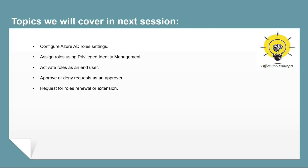In the next video, we will set up and configure Privileged Identity Management. I will demonstrate practically how to configure settings for Azure AD roles, how to assign roles to end users, how end users can activate the roles, how an approver can approve or reject a role assignment request, and how an end user can renew the role assignment once it has expired. If you learned something new from this video, please write in the comments, subscribe to the channel, and share it within your community. Thank you guys, thank you for your time, take care.